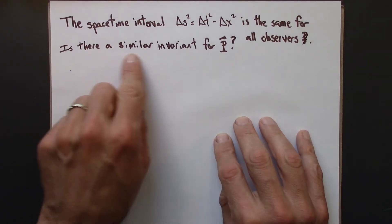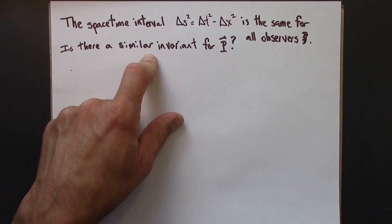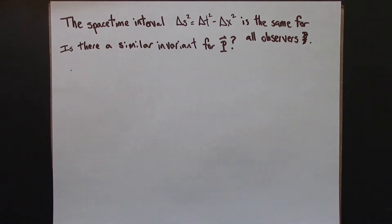So I wonder, is there a similar invariant for p? Something that's the same for all observers? And the answer is yes.